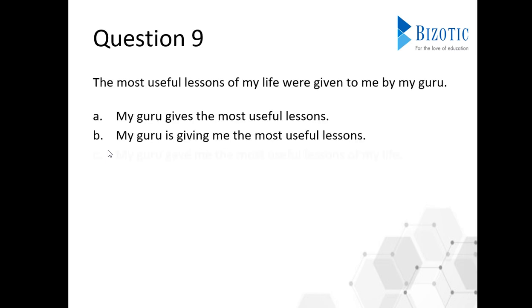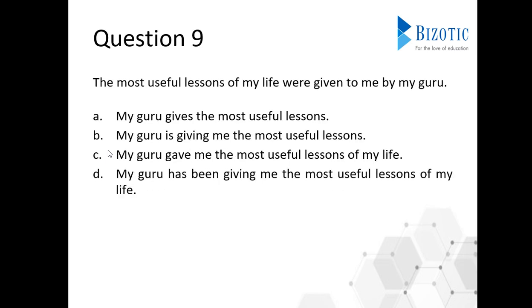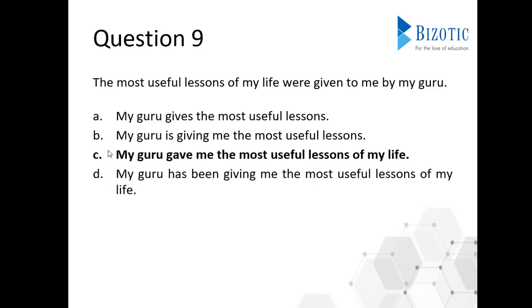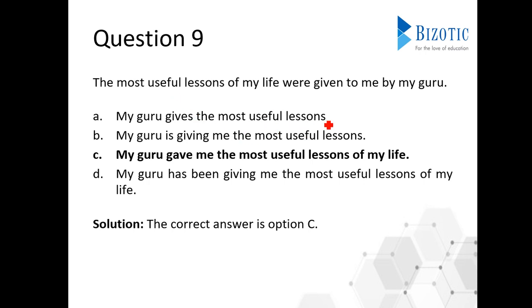Question nine: 'The most useful lessons of my life were given to me by my guru.' This is the passive form; let's change it to active. The solution is option C. The phrase 'the most useful lessons of my life' should come at the end as the object. Options that omit 'of my life' can be eliminated immediately.